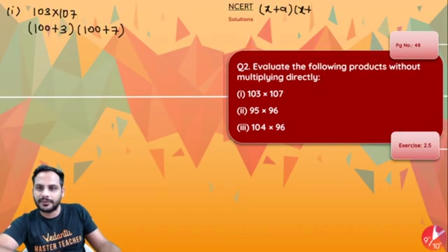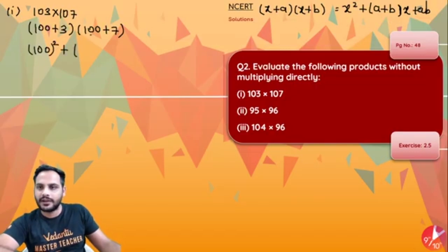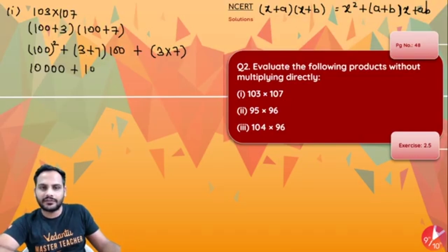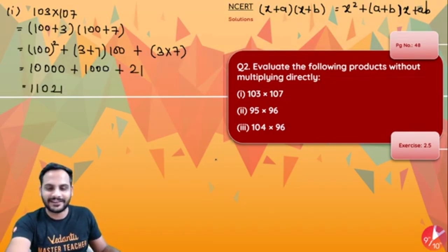The identity is: (x + a)(x + b) = x² + (a + b)x + ab. Here, 100 is the common number x, so it becomes 100² + (3 + 7)×100 + 3×7, which gives 10,000 + 10×100 + 21 = 10,000 + 1,000 + 21. So your answer is 11,021.